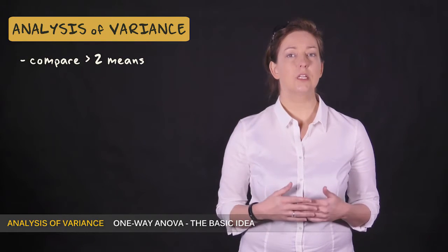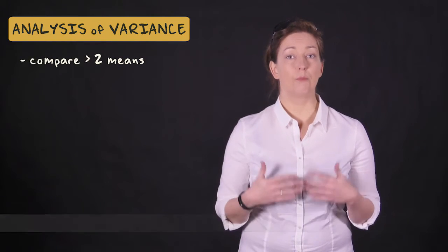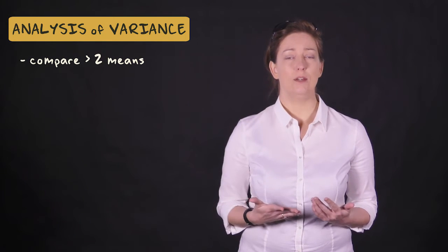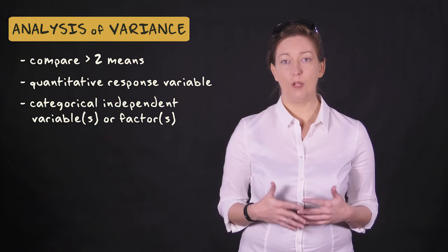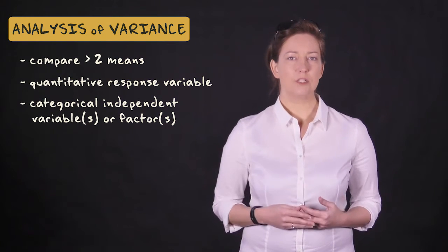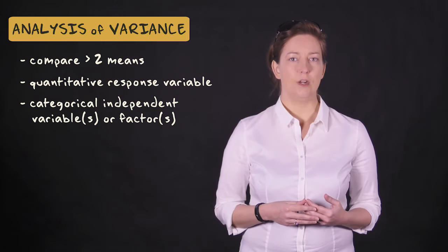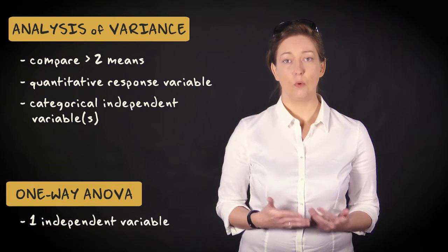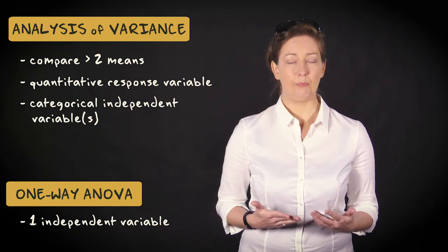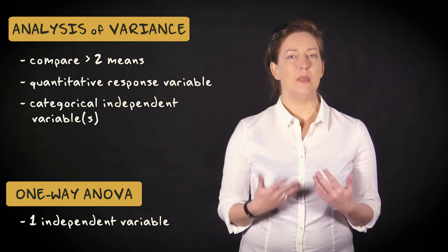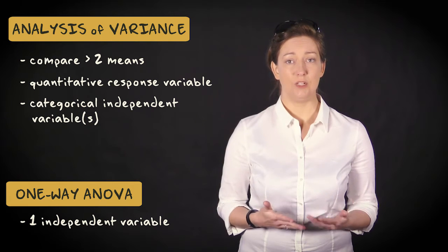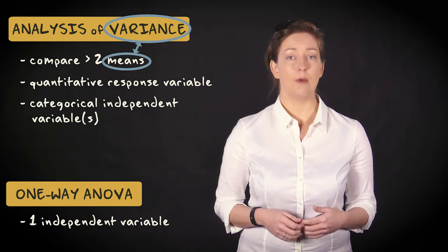Analysis of variance allows us to compare means of more than two groups. It's a method of analysis we use in research designs with a quantitative response variable and one or more categorical independent variables. The simplest type is one-way analysis of variance with just one independent variable that distinguishes three or more groups. In this video, I'll explain the basics of one-way analysis of variance and the logic behind using variances to decide something about means.